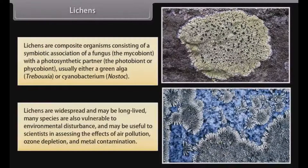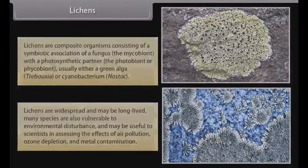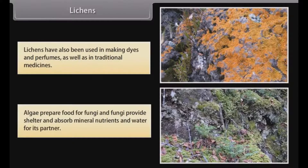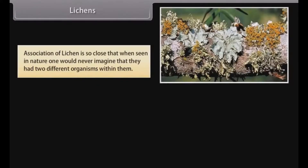Lichens are widespread and may be long-lived. Many species are also vulnerable to environmental disturbance and may be useful to scientists in assessing the effects of air pollution, ozone depletion and metal contamination. Lichens have also been used in making dyes and perfumes as well as in traditional medicines. Algae prepare food for fungi, and fungi provide shelter and absorb mineral nutrients and water for their partner. The association of lichen is so close that when seen in nature, one would never imagine that they had two different organisms within them.